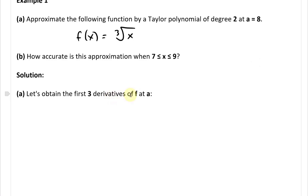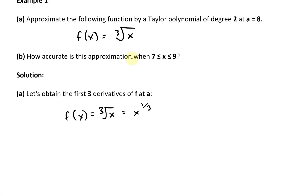To get the Taylor polynomial we need to find the first three derivatives of f at a. The zeroth one is just f(x), which equals the cube root of x, written in power form as x to the power of one-third. Plugging in a equals 8, we get 8 to the one-third, which is 2 — since 2 times 2 times 2 equals 8.